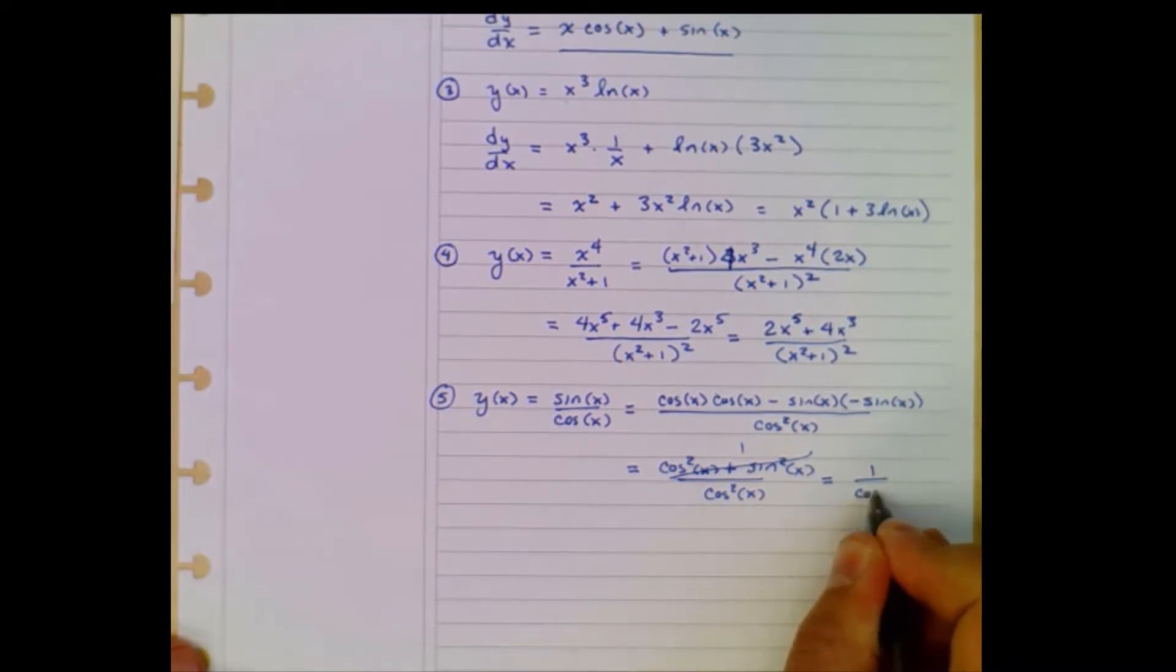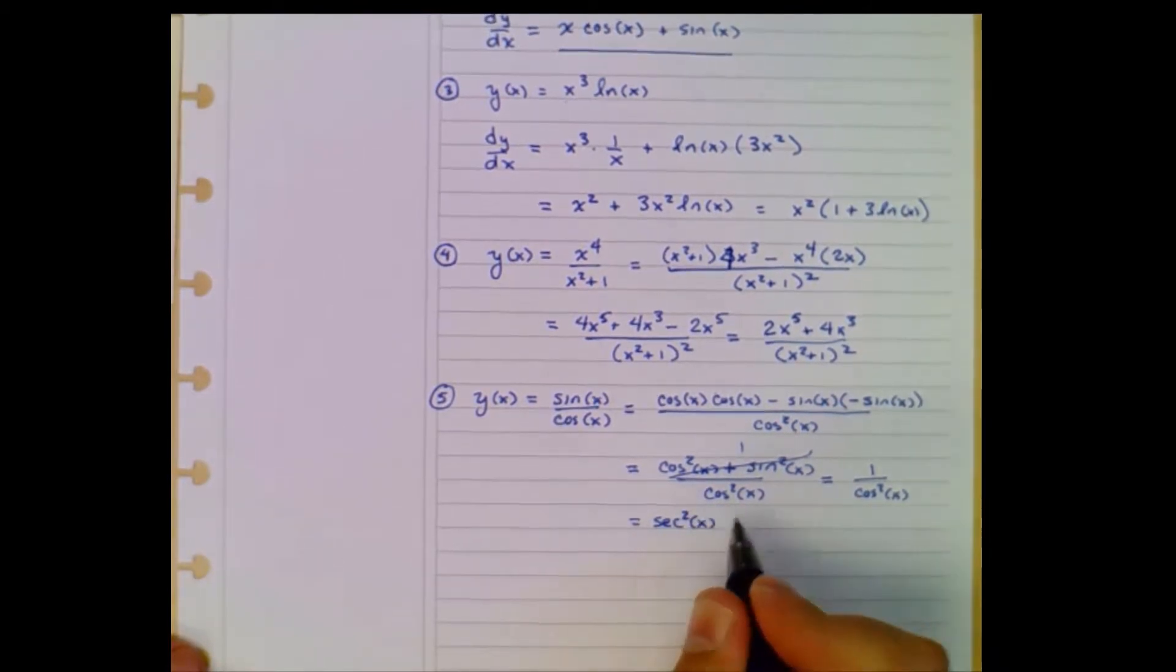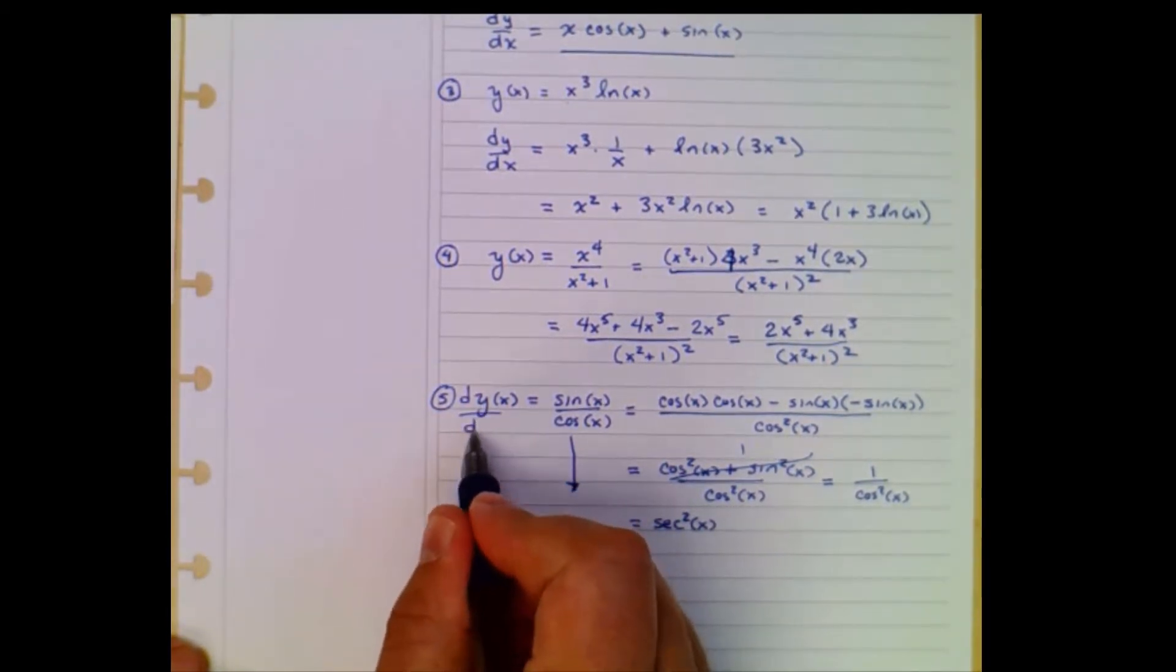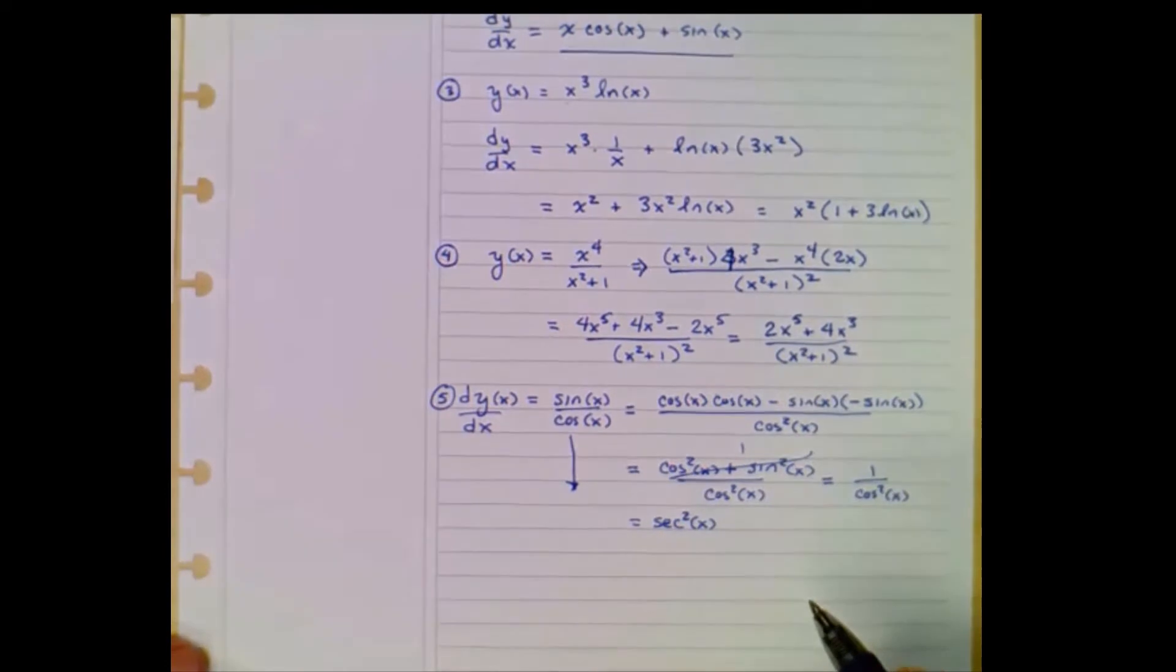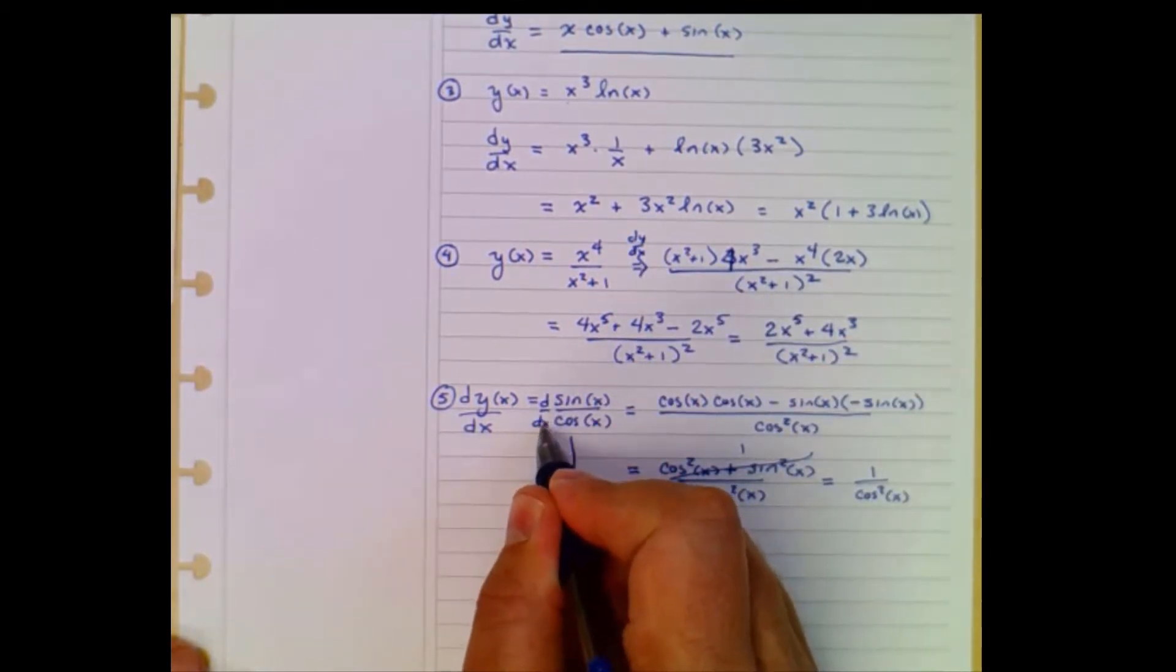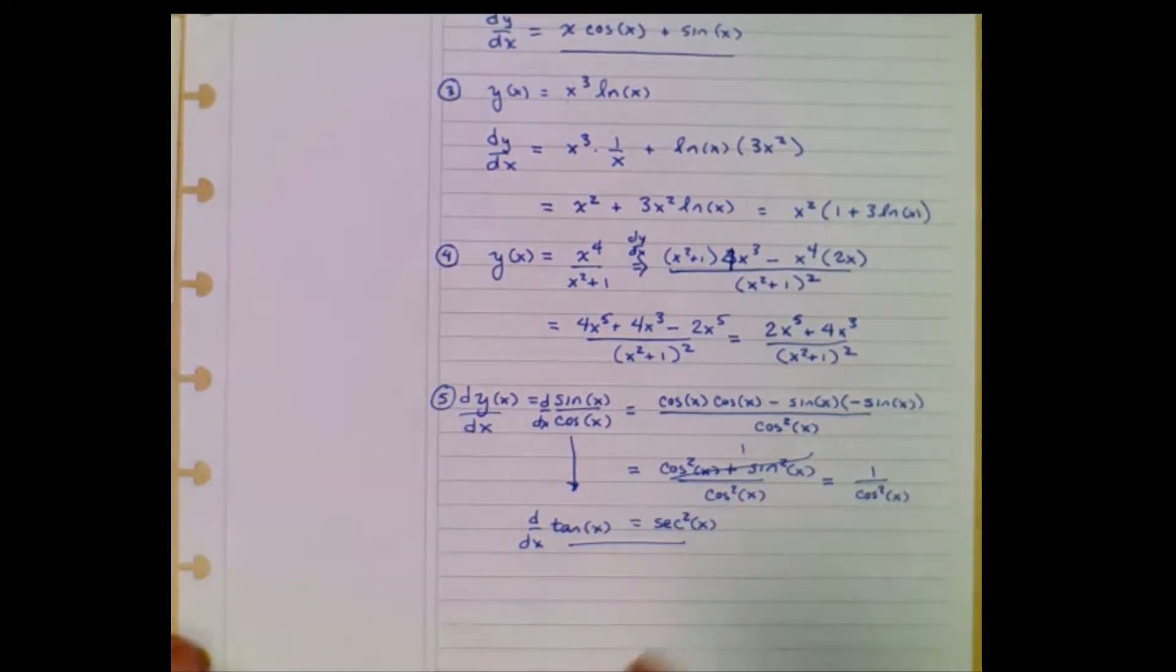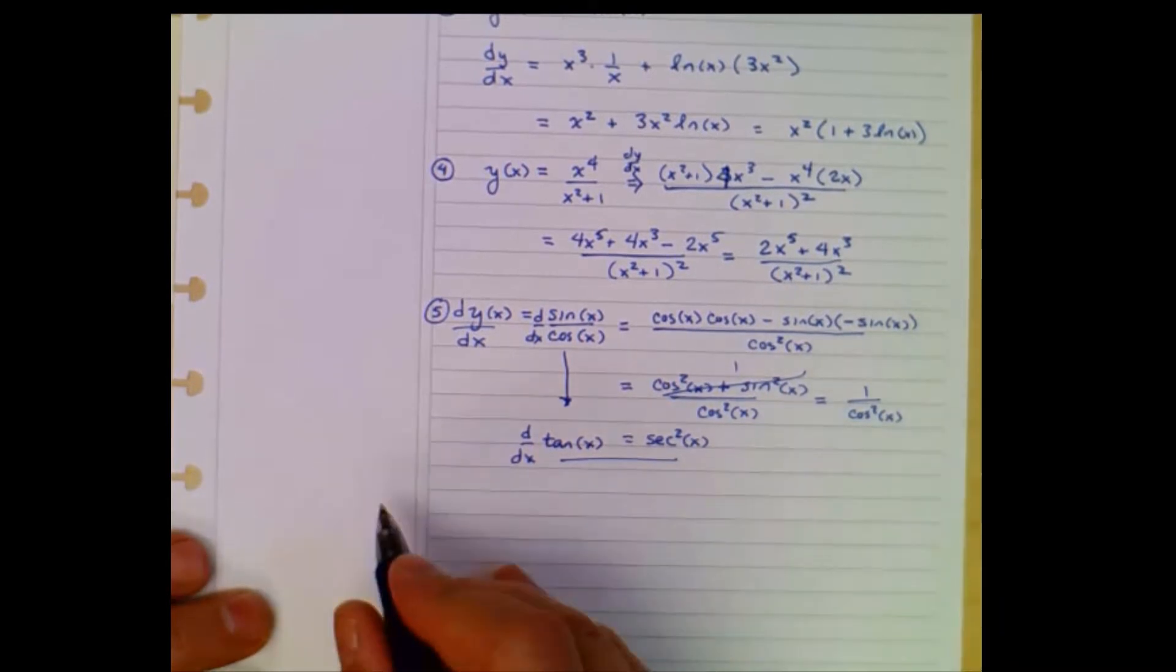So this is 1 over cosine squared x, which you may know as the secant squared of x. This, by the way is, this is meant to be dy dx. Did I make a mess of these things. I started compactifying. There we go. So the derivative with respect to x of tangent of x, because that's what sine over cosine is, is the secant squared. As you all might remember from trigonometry or pre-calc.